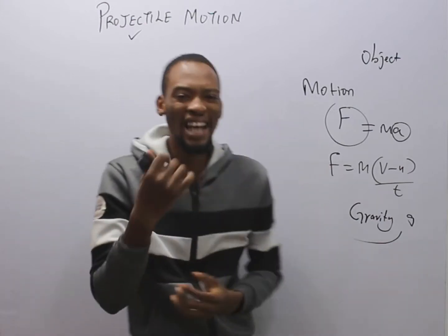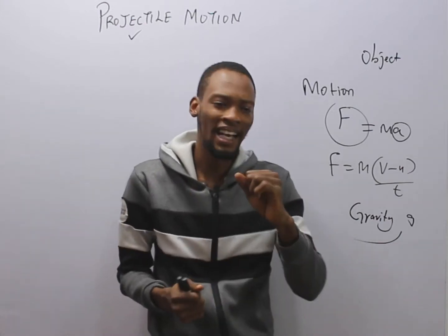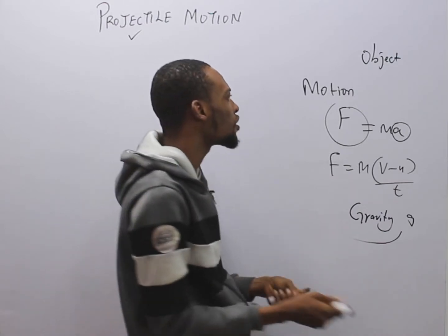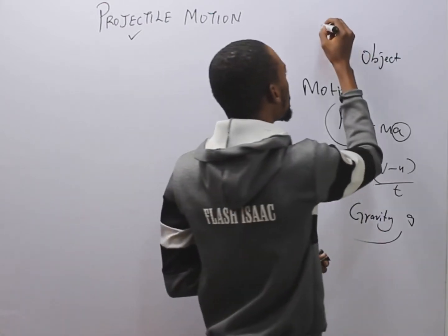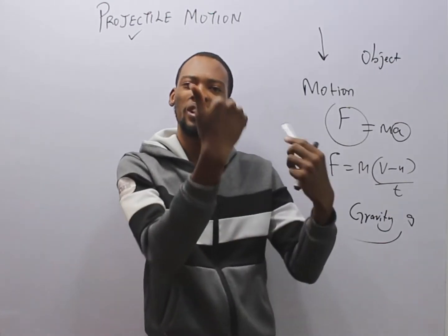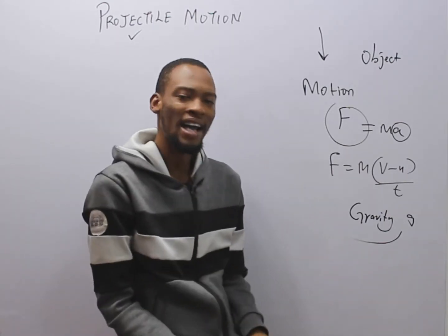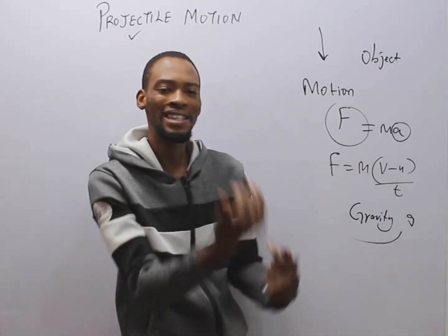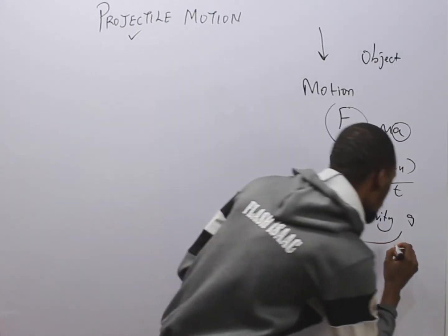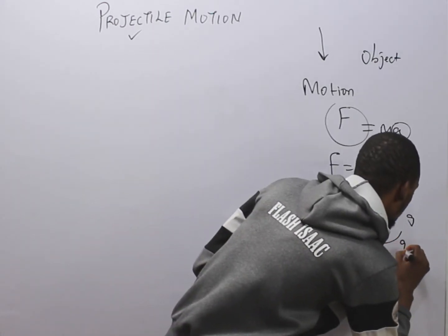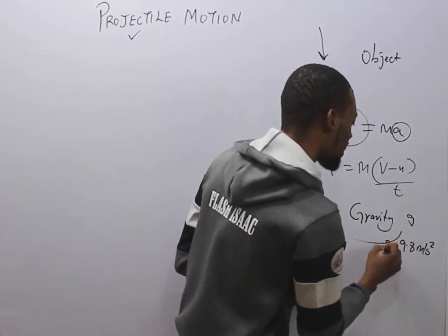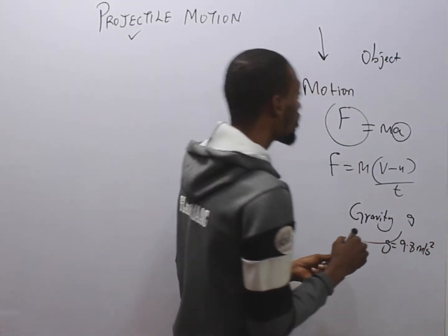The only force that acts on a projectile is the force of gravity. The force of gravity brings all objects down to Earth, so any object that goes up will surely come down. Gravity acts on that body, and the force of gravity is approximately 9.8 meters per second squared — it is acceleration due to gravity.